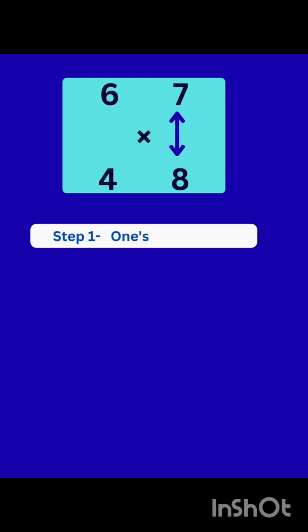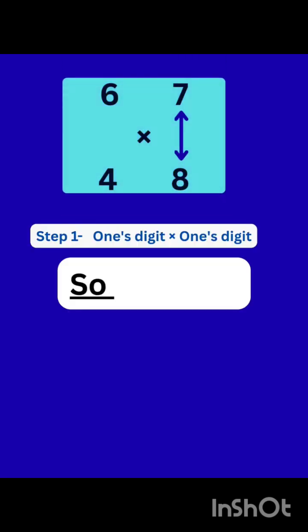So step 1 is multiply 1's digit with 1's digit. That will be 7 multiplied by 8. That will be equal to 56.